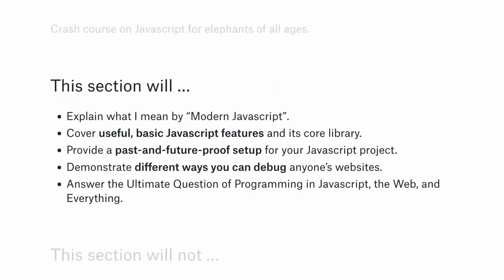This section will cover: what I mean by modern JavaScript, so when you look at websites posted before 2010 or after 2015 with different syntaxes, I'll clear that up. I'll go through basic features so you know what a variable is and how to declare a function. I'll provide a past- and future-proof setup so your code works on IE10 or a browser from two years from now. And I'll go through ways to debug — showing you the web inspector, useful functions, and how to print stack traces.